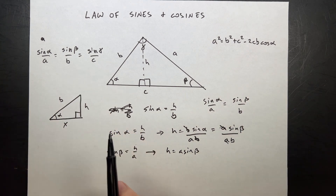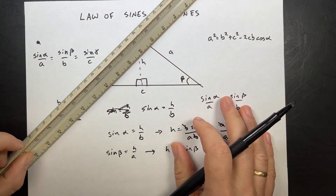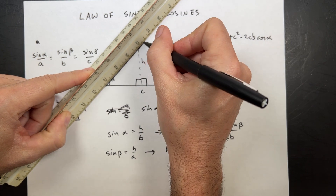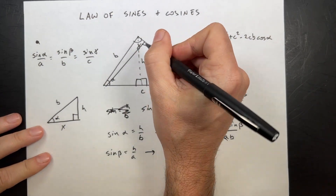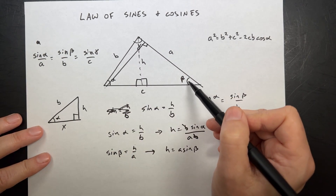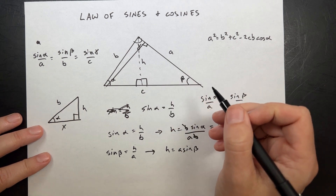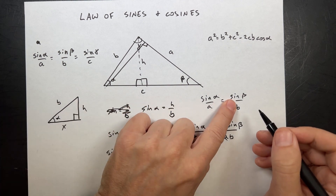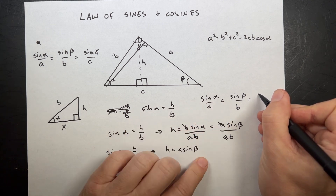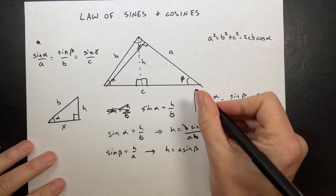But that's not the full thing. We've got to get gamma in there too. So now I do the same thing with gamma and b and beta and c, and you're going to get the same kind of relationship. They're both going to be related to h, and I'm going to get sine of gamma over c. If it's equal to that, well then it's got to be equal to that. Boom. Law of sines.